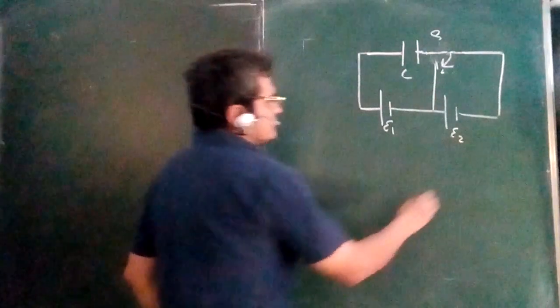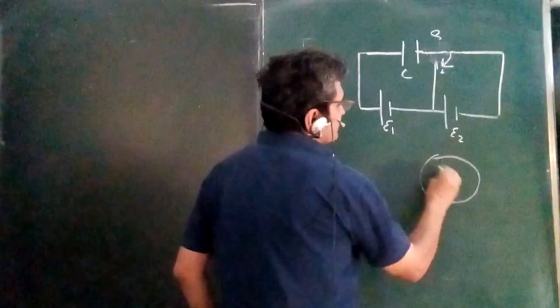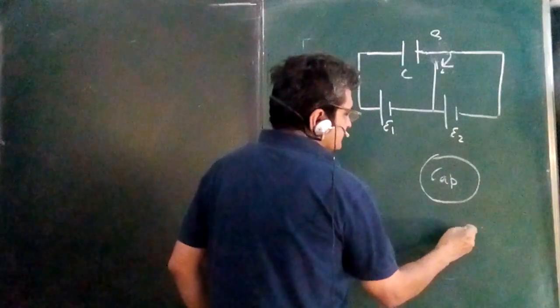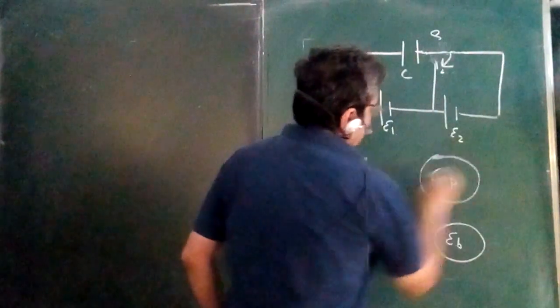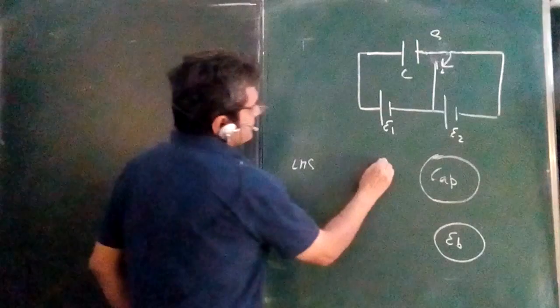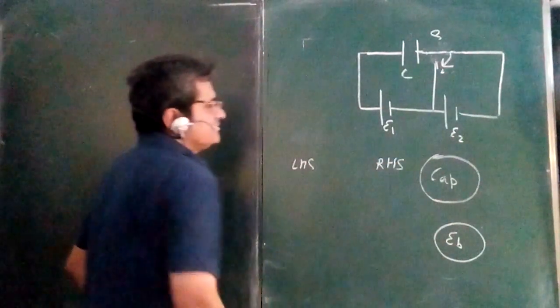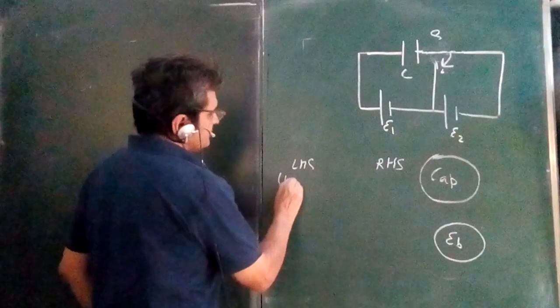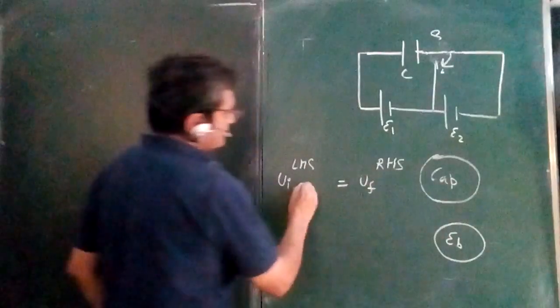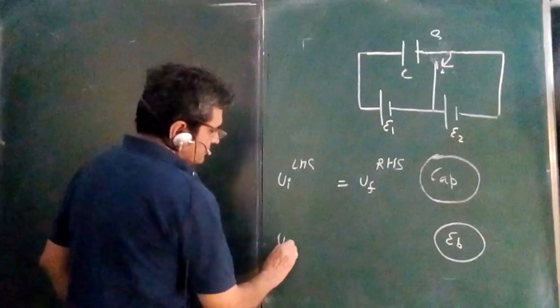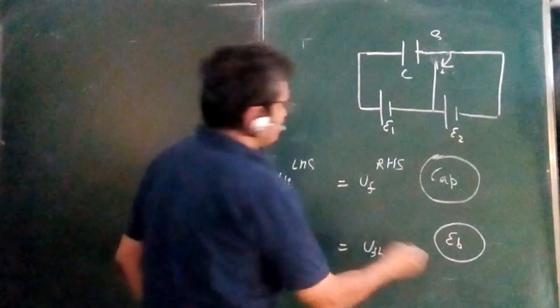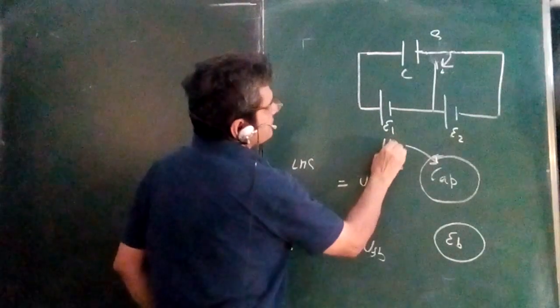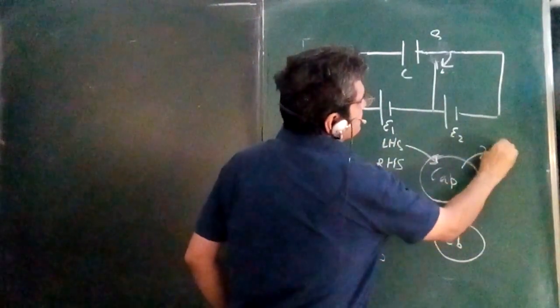First of all, please recall the standard formula method of solving such problems. There is a system of capacitors and a system of batteries. As usual, on the left-hand side and right-hand side we write the energies. The capacitor system has some initial energy and some final energy, and the battery system has some initial energy and some final energy.